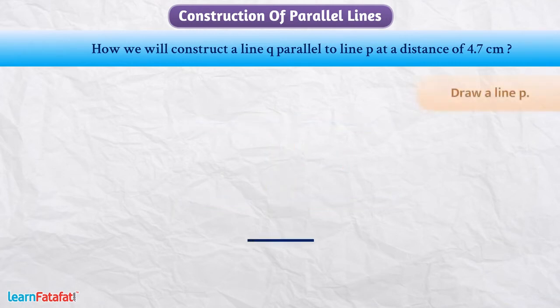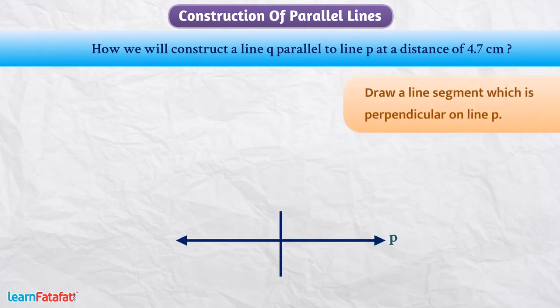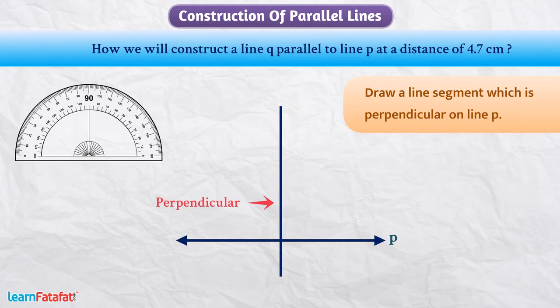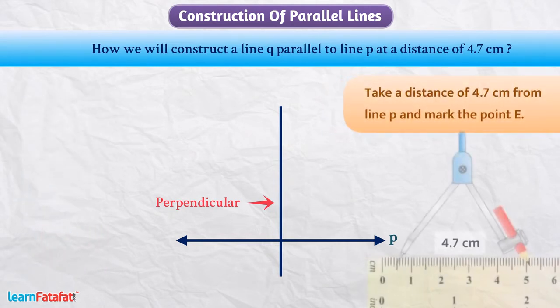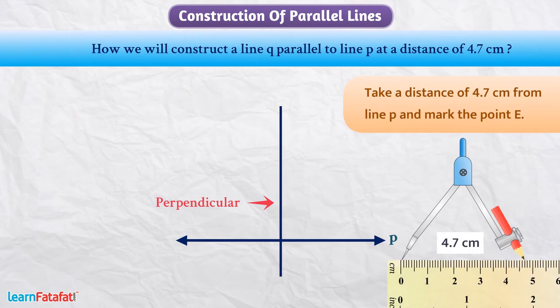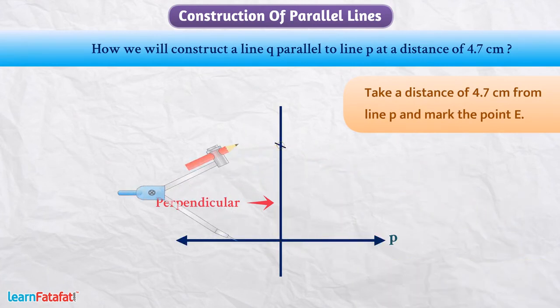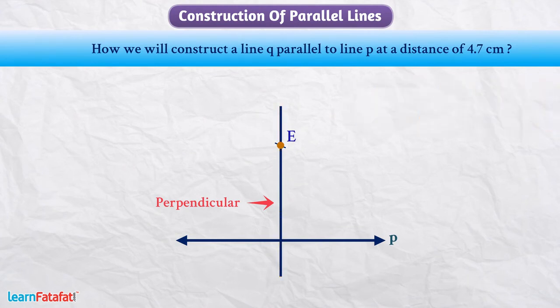For this, first we draw line P. Now we will draw the line segment which is perpendicular on line P. We can do this with the help of protractor or compass. After this, we will take a distance of 4.7 cm from line P and mark point E on the perpendicular. Now, we can follow the above protocol and draw line Q.